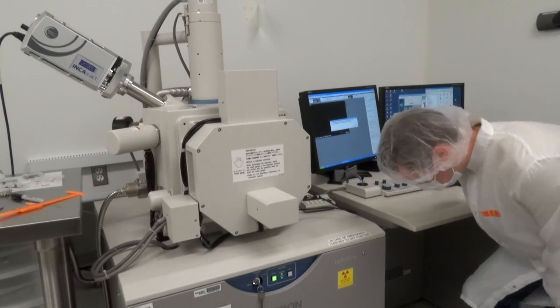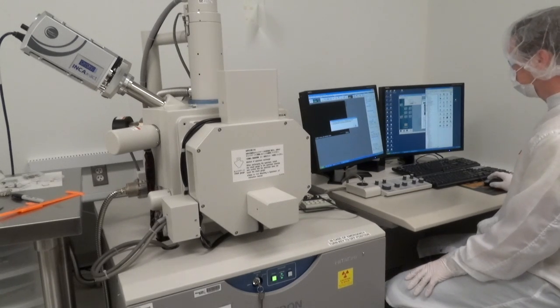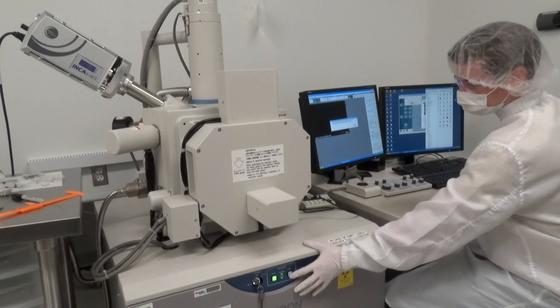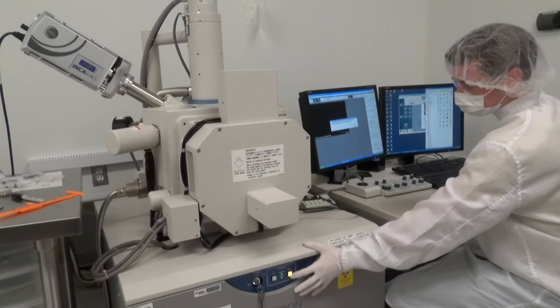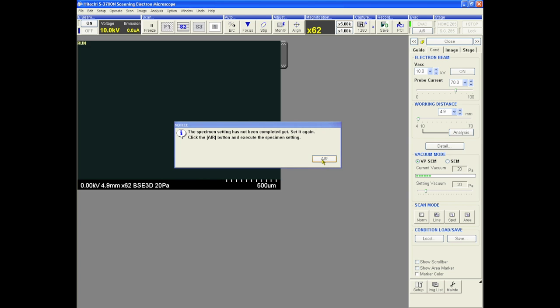The first step of using the VPSCM is to vent the chamber if it is not already vented. To do this, click Air either in the center of the display screen or use the physical button on the front of the SEM. The chamber will vent during the sample preparation process.